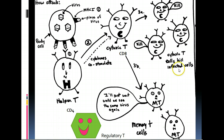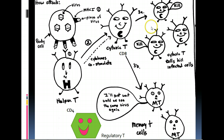All these cytotoxic T cells will go and kill the cells that have been infected by the virus. Yes, these cells will be killed, but by killing the cells, we also kill the virus. So why you get a sore throat, for example, is because cytotoxic T cells are killing your throat cells to get rid of the virus. Your throat cells will then go through mitosis and replace themselves, which is why the sore throat goes away. These cytotoxic T cells are responsible for going after the cells that have been infected by the virus.